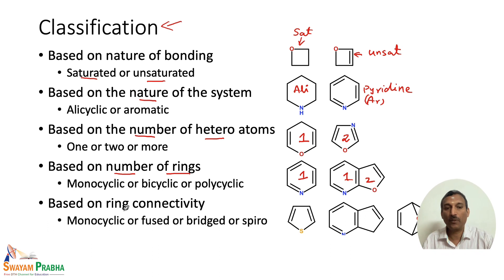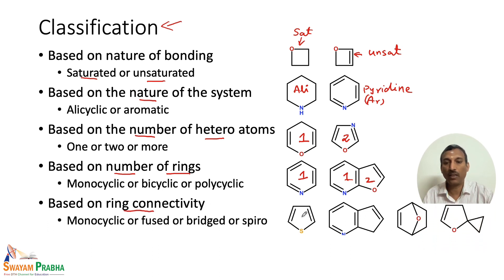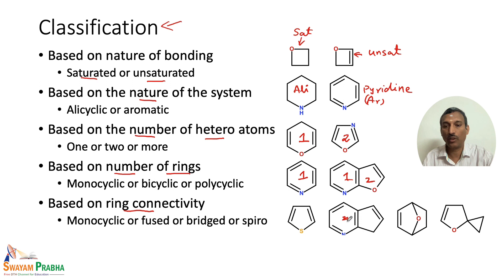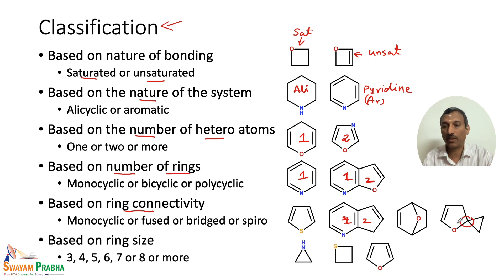We can also classify them based on ring connectivity. A monocyclic ring has no connection. A fused ring system has two rings connected or fused together. We also have a bridged ring system — formed, for example, by the Diels-Alder reaction. And we have the spirocyclic ring system, where one carbon is common to both rings and the heteroatom is present in one of them.